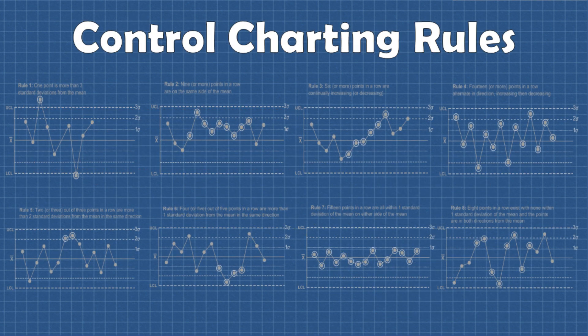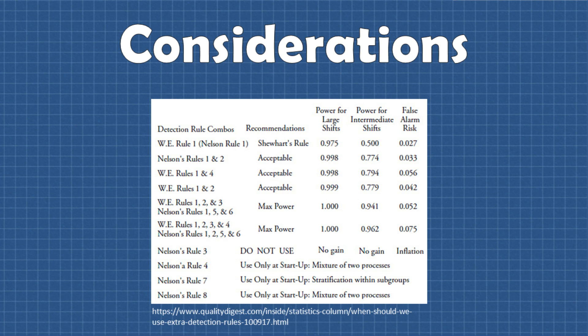The other reason to carefully consider how you use these rules is that for each additional rule the risk of false positives increases. While these rules are based on phenomena that are statistically unlikely to happen in a stable process there is still a small percentage chance of them actually happening and it just being normal variation and that risk of false positive compounds as we add more rules.